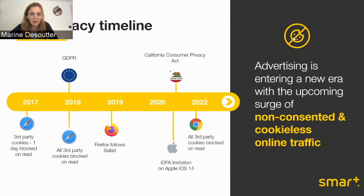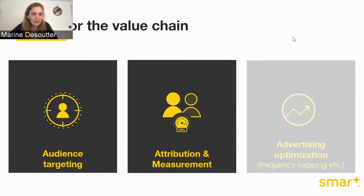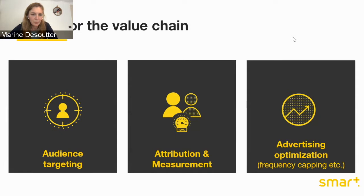This means we have two main topics to keep in mind for the future: non-consent and cookie-less traffic. As marketers and publishers, we need to take that into consideration in our strategy. The impact of third-party cookie deprecation on the value chain is mainly three things: audience targeting, attribution and measurement, and advertising optimization — for example, frequency capping. All of those strategies are based on third-party cookies, and without user identification, they can't be applied properly.